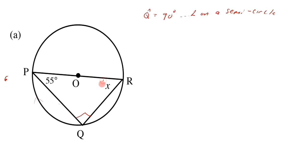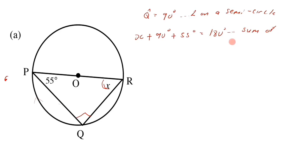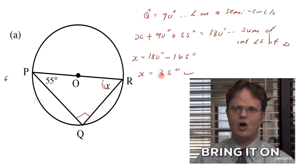We are looking for x. We have 90 degrees, 55 degrees, and x. Since PQR is a right angle triangle, we can use the sum of interior angles: x plus 90 degrees plus 55 degrees equals 180 degrees, with reason 'sum of interior angles of a triangle'. So x equals 180 minus 145, giving us x equals 35 degrees.